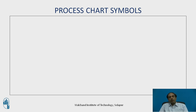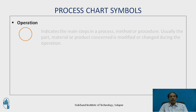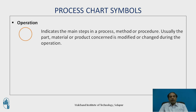There are a variety of standardized flow process symbols used while drawing the charts. The first one is operation, indicated by a circle. Operation can be a manual operation or a machine operation. It indicates the main step in a process, method, or procedure. Usually the part, material, or product concerned is modified or changed during the operation.